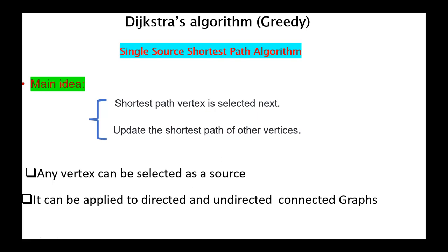The main idea: the shortest-path vertex is selected next. After that, we update the shortest path of other vertices. This process of updating other paths is called relaxation. Any vertex can be selected as a source, and the algorithm can be applied to directed and undirected connected graphs.